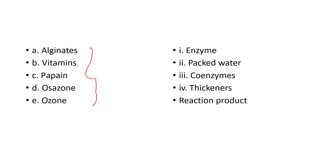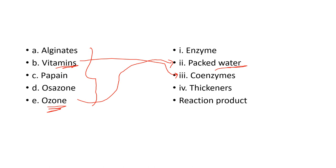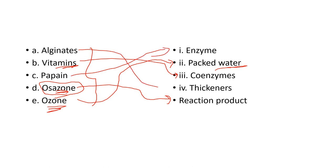Vitamins act as coenzymes. Ozone is a good disinfectant and sterilizing agent — used in ozonized packaged water at railway stations. Osazone is a reaction product — look up what osazone is and where it appears. Papain is an enzyme. Alginates are thickeners.